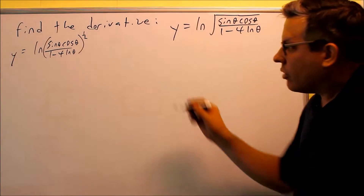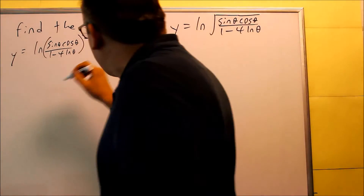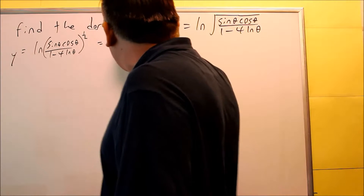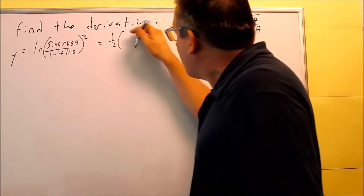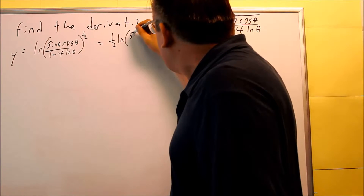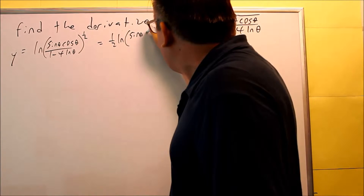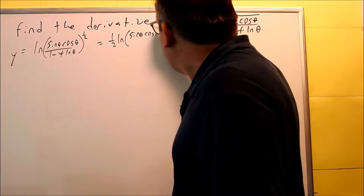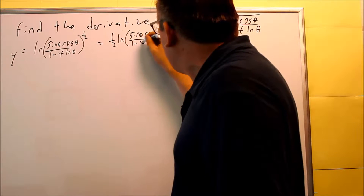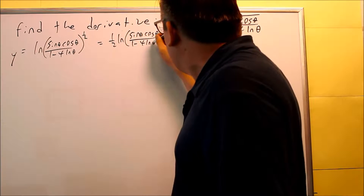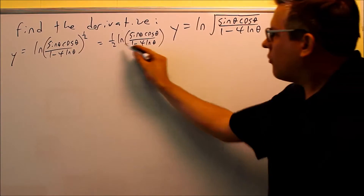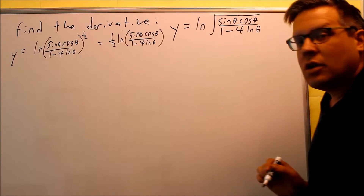The 1/2 power can be brought down to the front, so this can be written as 1/2 times natural log of sine theta cosine theta over 1 minus 4 natural log of theta. So 1/2 is brought down front.